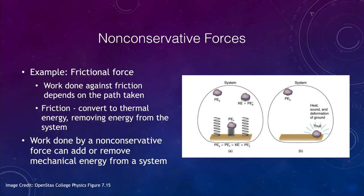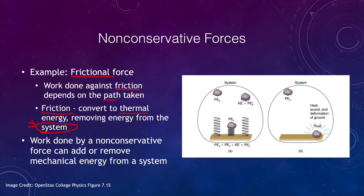An example of a non-conservative force would be the force of friction, because the work done against friction depends upon the path that is taken. If it is a longer path, it's going to undergo more frictional force than a shorter path. When you look at friction, the energy is not destroyed but it is removed from the system — it is converted to thermal energy, in other words heat.